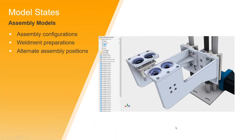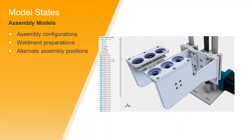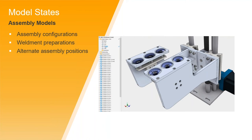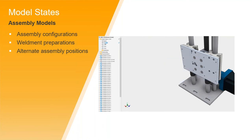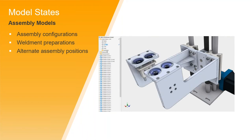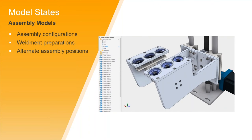Here's a quick video showing the assembly model states. You can create many different assembly configurations, weldment preparations, alternate assembly orientations, and so on. You can see in the model browser there is no longer any Level of Detail folder. Personally, I am really looking forward to model states for both parts and assemblies.